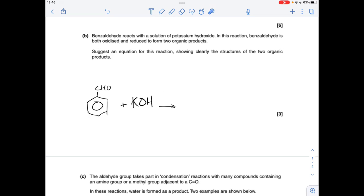Part B now. When benzaldehyde is reacted with potassium hydroxide we're told it's both oxidised and reduced to form two organic products, so we've just got to think about what happens to this aldehyde group.